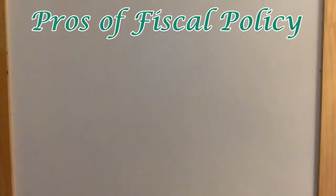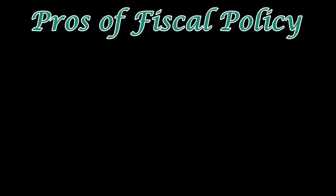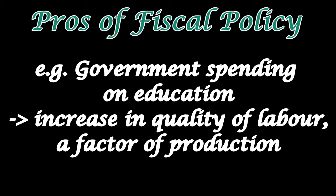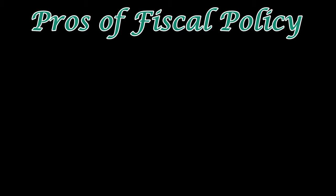Let's go into a little evaluation here about the pros and cons of fiscal policy. Fiscal policy includes government spending, which can also potentially influence the long-run aggregate supply curve and cause long-run economic growth. For example, if the government spending is used on education, in the long run, the quality of labor will improve and the productive capacity will increase. Now, in these three situations, fiscal policy will come in handy.